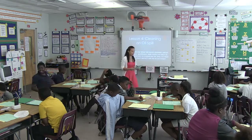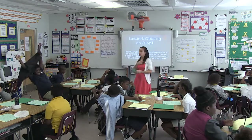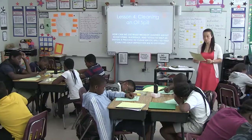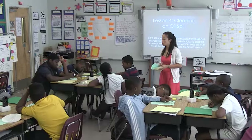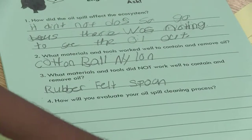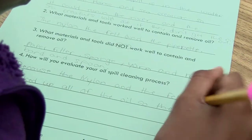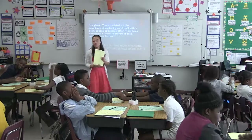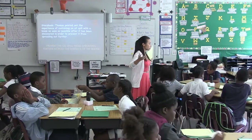Look at the handout. How did the oil spill affect the ecosystem? Don't tell me — write it down. How do you think it affected the ecosystem? What materials and tools worked well to contain and remove the oil? That's what the boom technology did. What materials and tools did not work well to contain and remove the oil? And how will you evaluate your oil spill cleaning process? How will you know it worked? We have a $20 million budget.